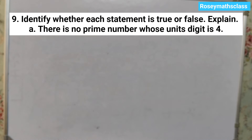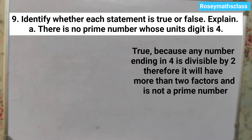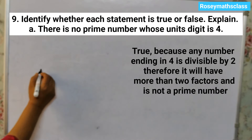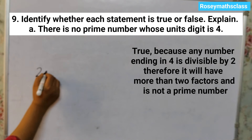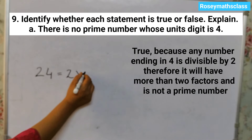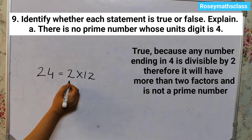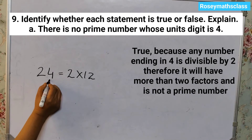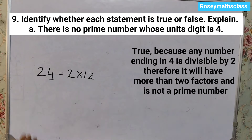There is no prime number whose unit's digit is 4. That is true. Because any number ending in 4 is divisible by 2, and if it is divisible by 2, it means it is not a prime number. For example, 24 is 2 times 12, so it is divisible by 2. Any number which has 4 in the unit's place is divisible by 2.